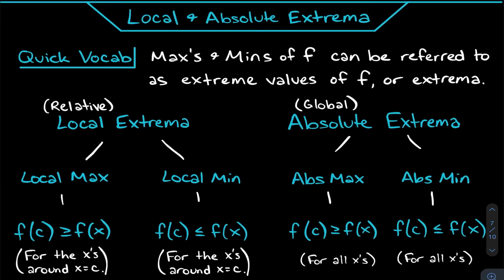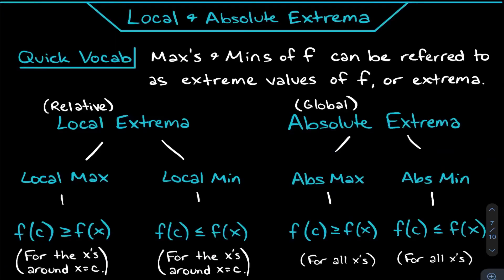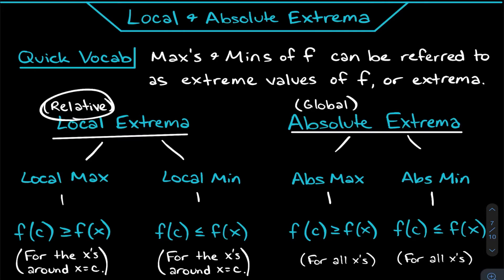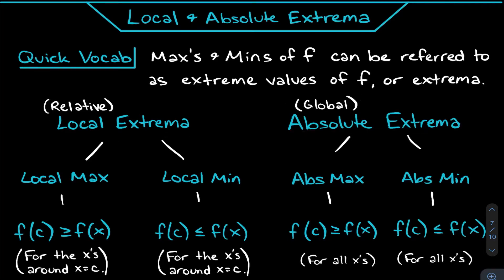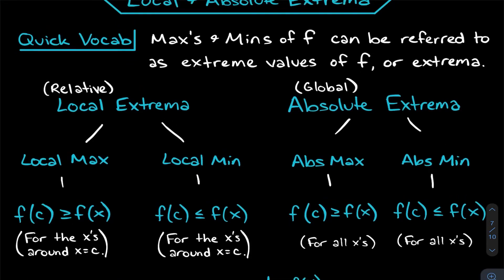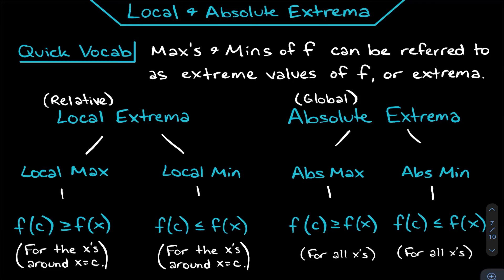Moving on to local and absolute extrema. The word 'extrema' just means extreme values — maximum or minimum values. There are two types: local (also called relative) extrema and absolute (also called global) extrema.